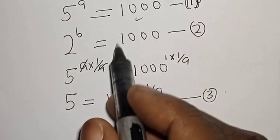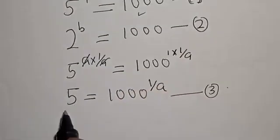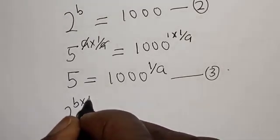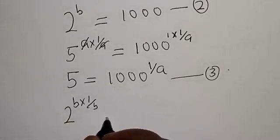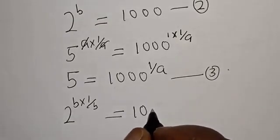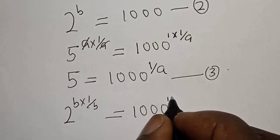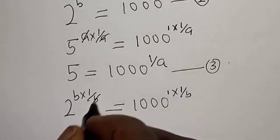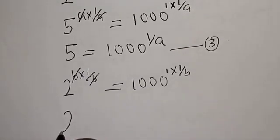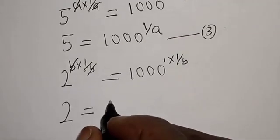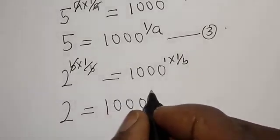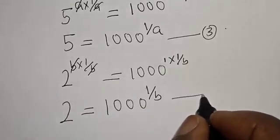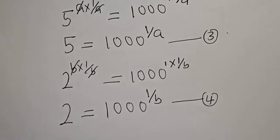From equation 2, we multiply the exponent of both sides by 1 divided by b. That is: 2 raised to power b, multiplied by 1 divided by b, is equal to 1000 raised to power 1 divided by b. This gives us 2 is equal to 1000 raised to power 1 divided by b. Let's call this equation 4.